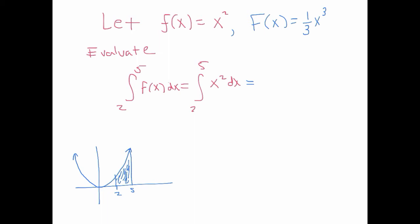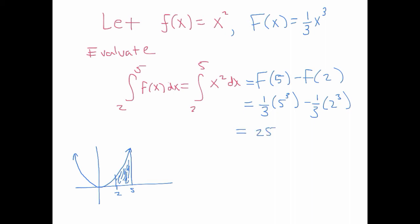That means we evaluate the antiderivative at 5 minus the antiderivative at 2: F(5) minus F(2). That is (1/3)(5³) minus (1/3)(2³), which equals 125 thirds minus 8 thirds, which equals 117 thirds, or 39. So the power of this is that we found this area exactly — it's not an approximation — and we did it by using an antiderivative and subtracting.